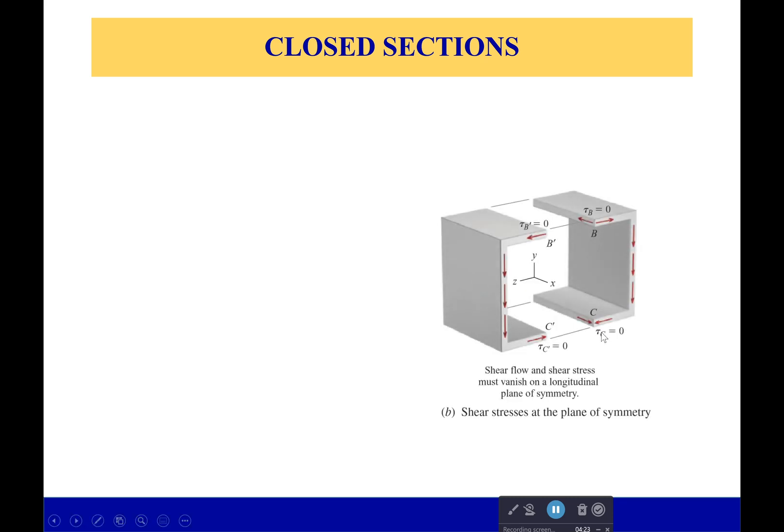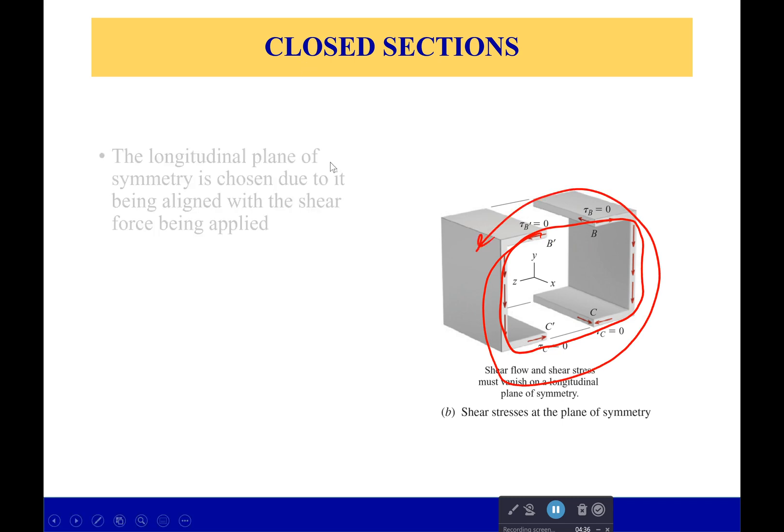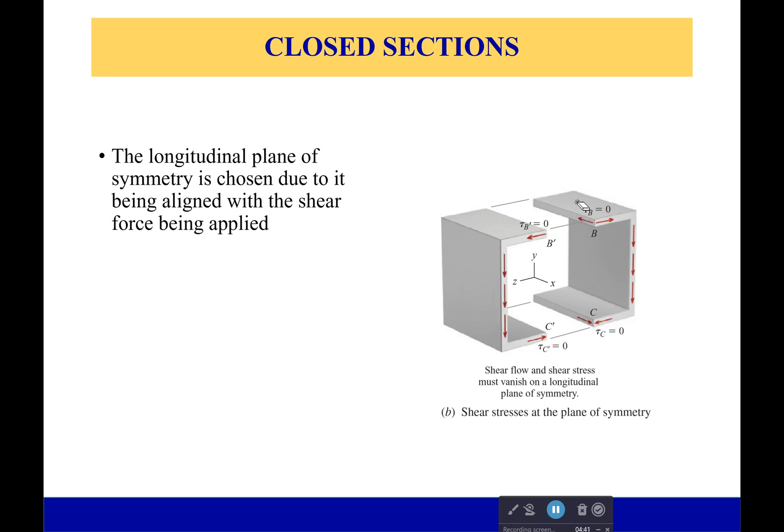Well, if we cut it along that plane, what we'll see is that yes, we have like two sections. And obviously, at some point this has to be zero. It can't just swirl around forever and increase the shear flow to infinity. No, at that longitudinal plane of symmetry, we have to have zero shear flow.